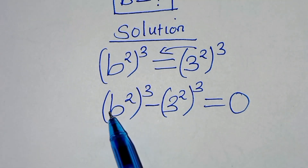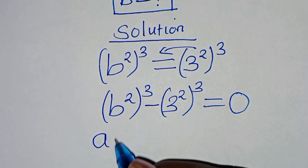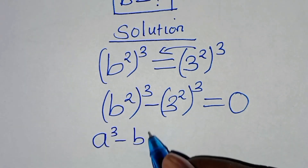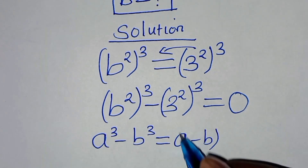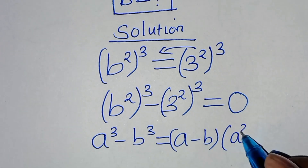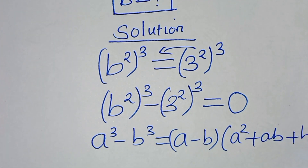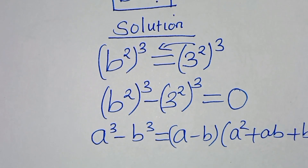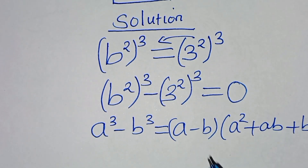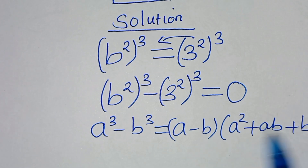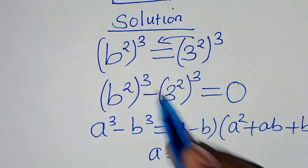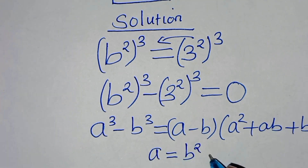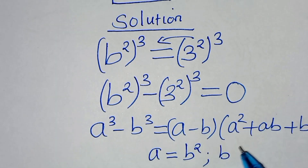Now, this is actually the difference of two cubes, expressed as a to power 3 minus b to power 3, which we can express as a minus b, then a squared plus a times b, then plus b squared. From this identity, we find that a is the same thing as b squared, and b is the same thing as 3 squared.